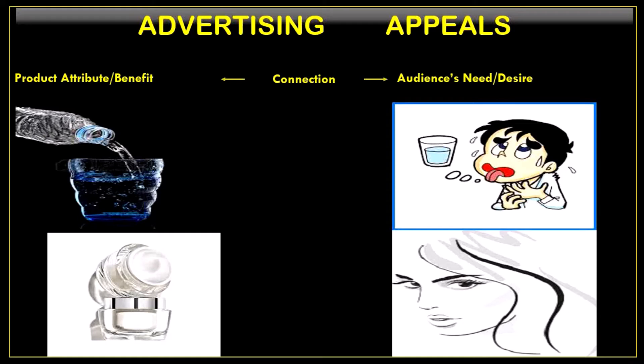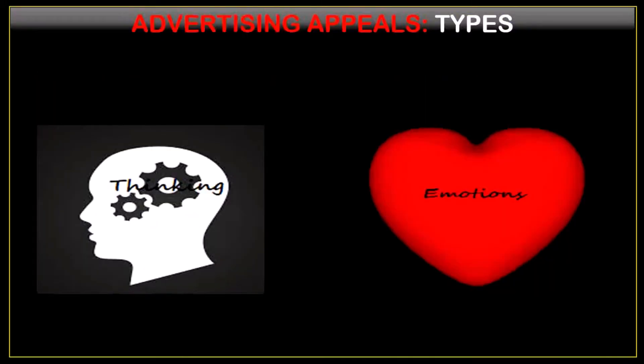Advertising appeal is an attempt to draw a connection between the product being advertised and some need or desire that the audience feels. Through this connection, the advertiser tries to convince the audience that this is the product that will satisfy them or meet their desire. There are two types of advertising appeals: logical appeal and emotional appeal. Logical appeal aims for the buyer's head, whereas emotional appeal aims for the buyer's heart.